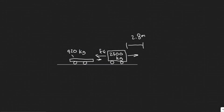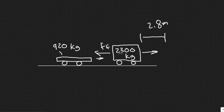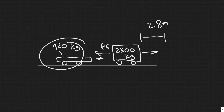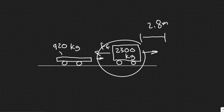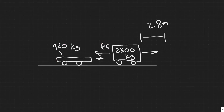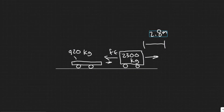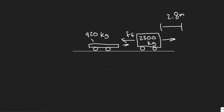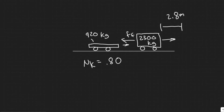First thing we always want to do is draw what's going on and try to understand it. We have this sports car with a mass of 920kg, and then it's going to run into the back of this SUV with a mass of 2,300kg. Their bumpers are going to lock, and they're going to basically skid forward 2.8 meters and then stop. We are also told the coefficient of kinetic friction is 0.80.